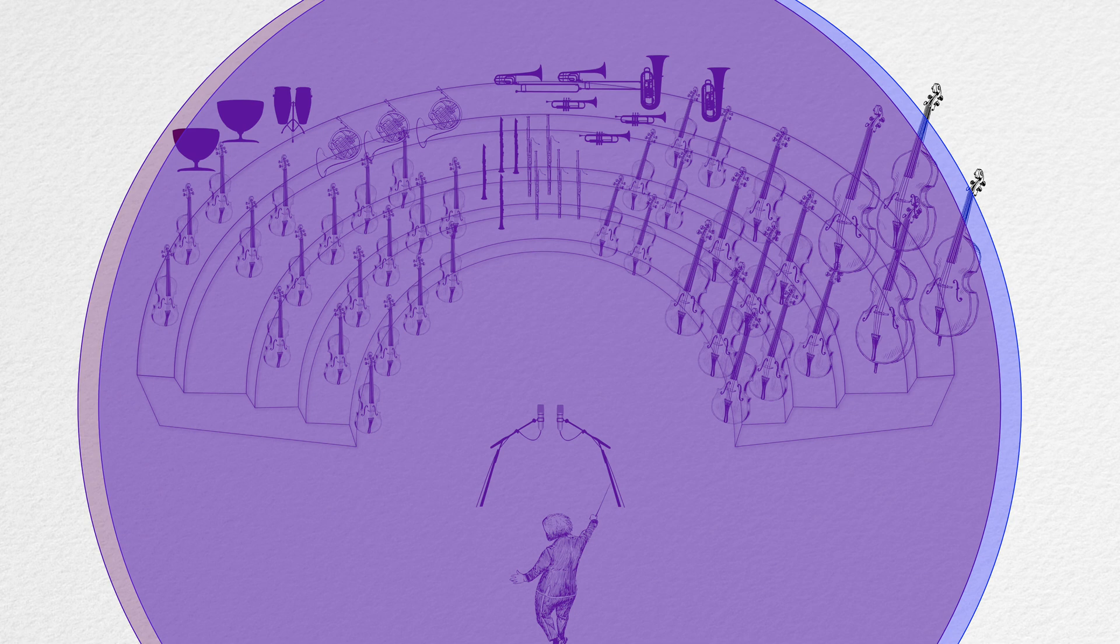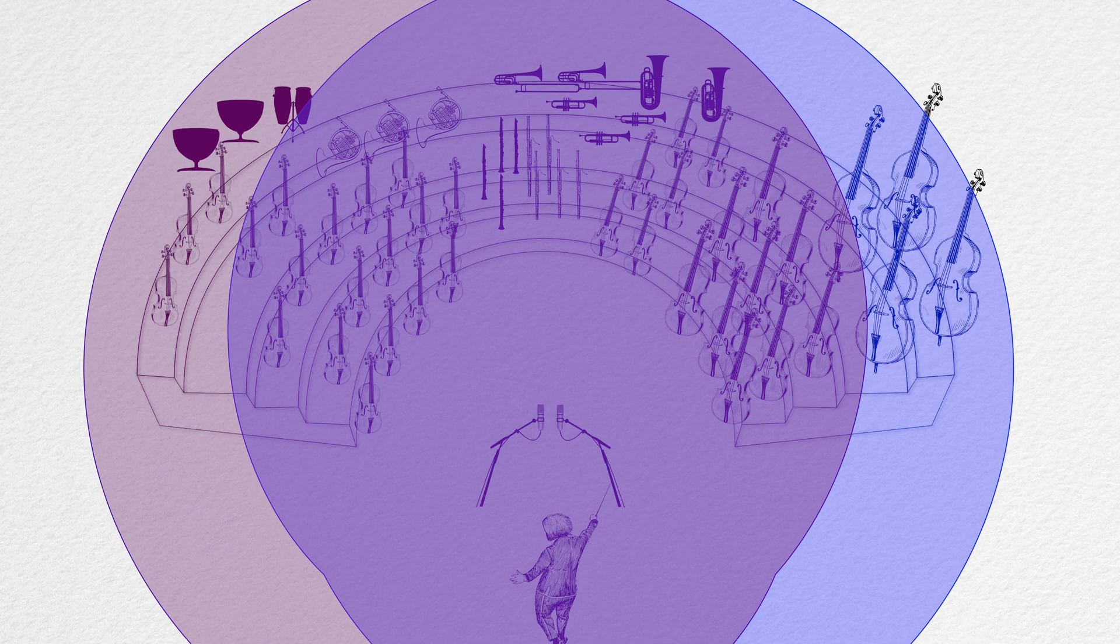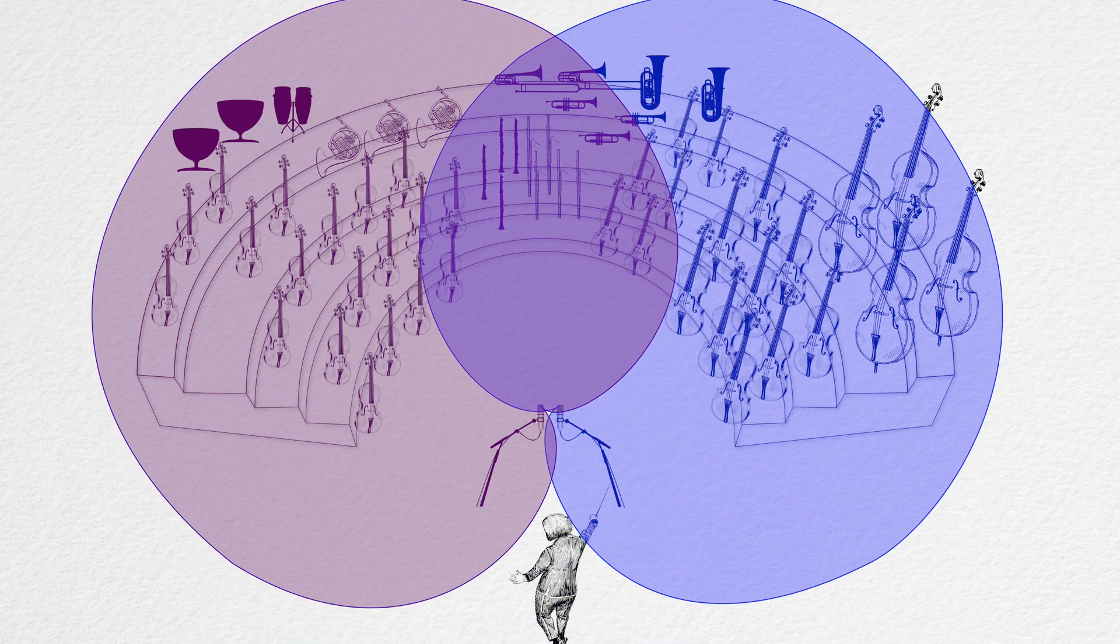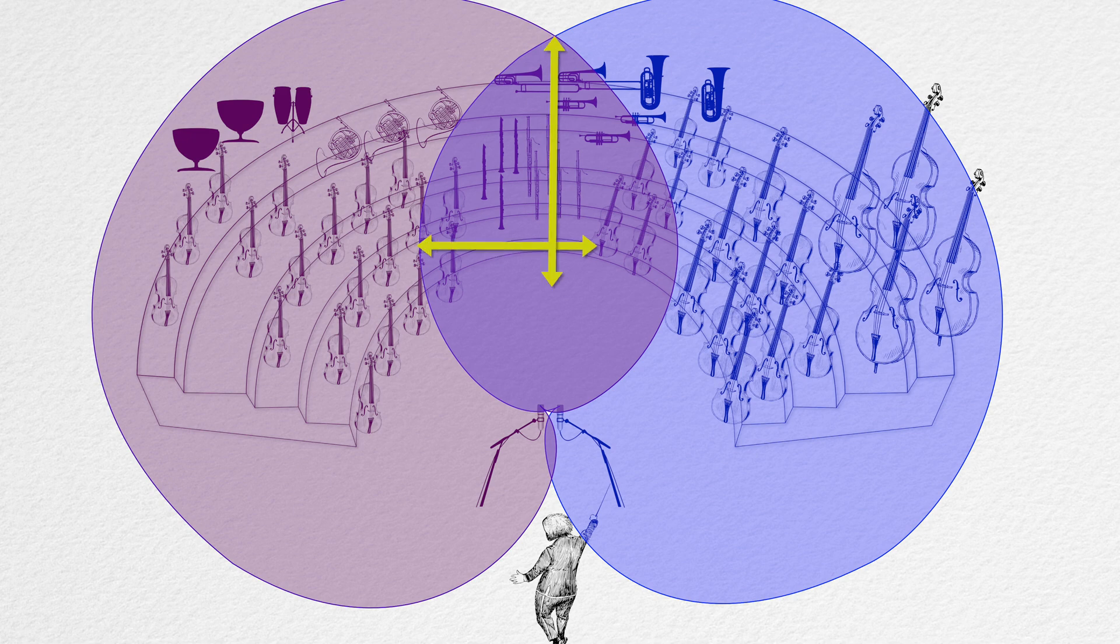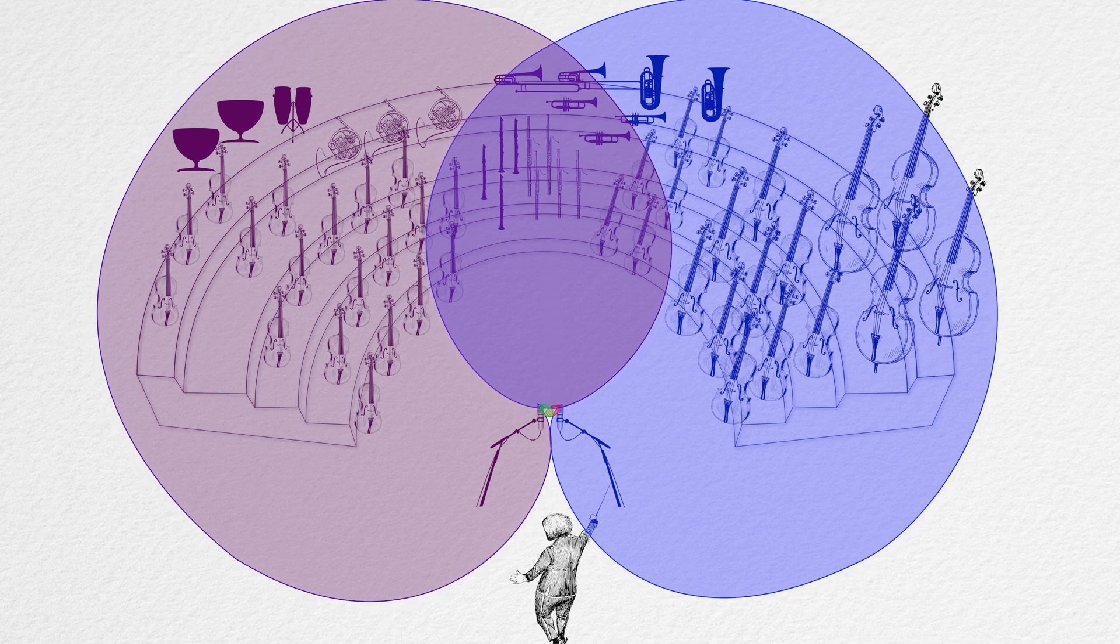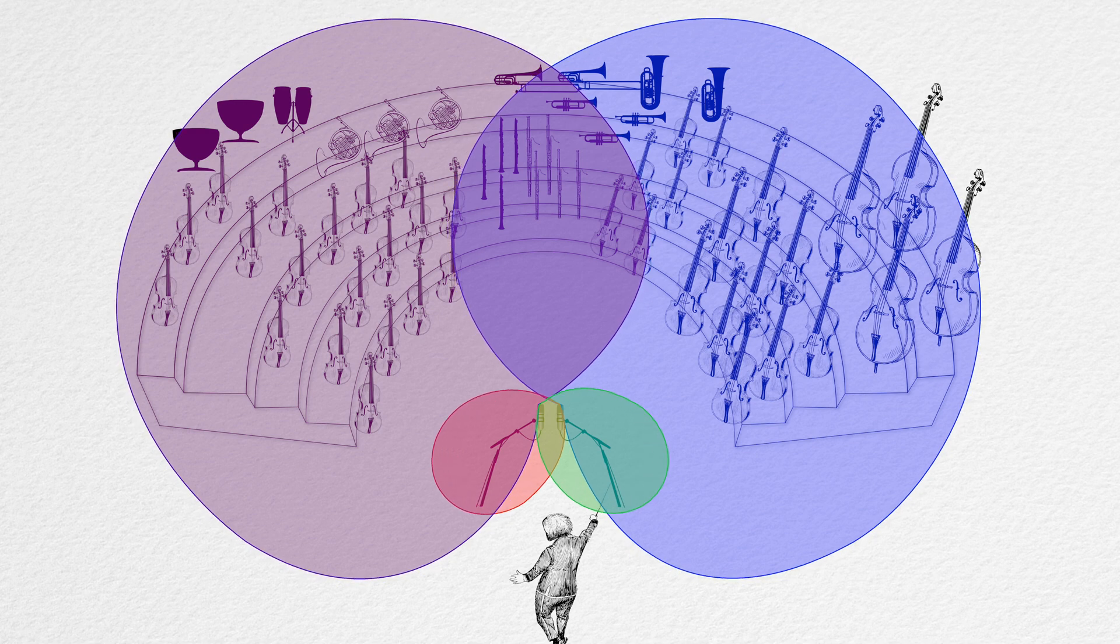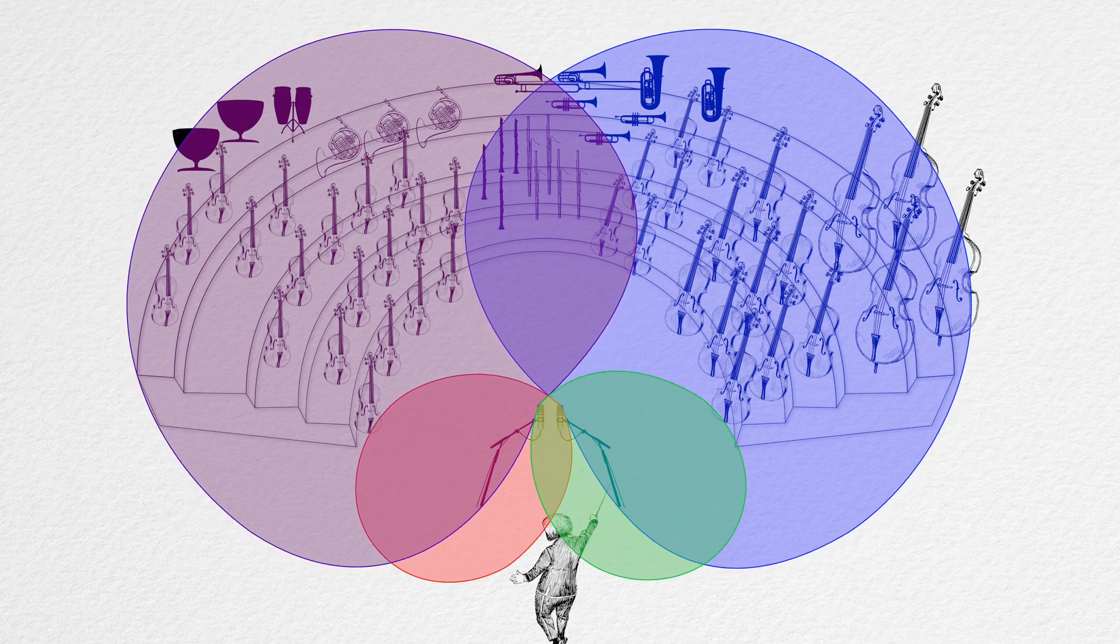Now, let's morph into a cardioid. This is the classic theoretical ORTF response. Now you can see the overlapping coverage of both mics and where each one picks up its side of the orchestra. Did you notice the overlapping coverage change? All right, let's keep morphing the pattern. Notice the overlapping coverage gets smaller. This is pretty cool, and there are lots of use case possibilities here.